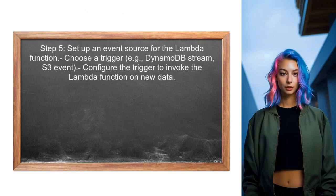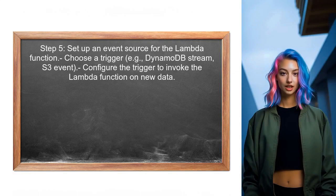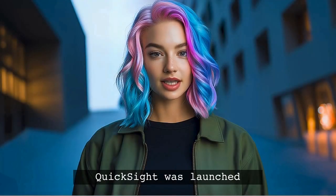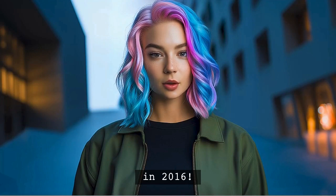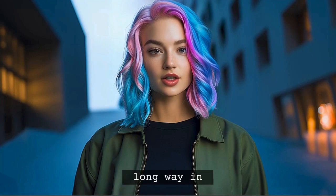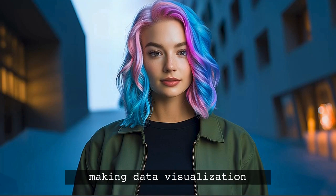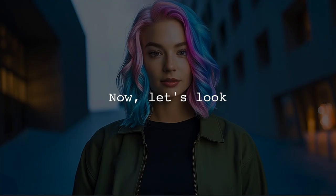Finally, set up an event source for the Lambda function. This could be a trigger from the database or a scheduled event that checks for new data. Fun fact: did you know that AWS QuickSight was launched in 2016? It has come a long way since then, making data visualization easier for everyone.